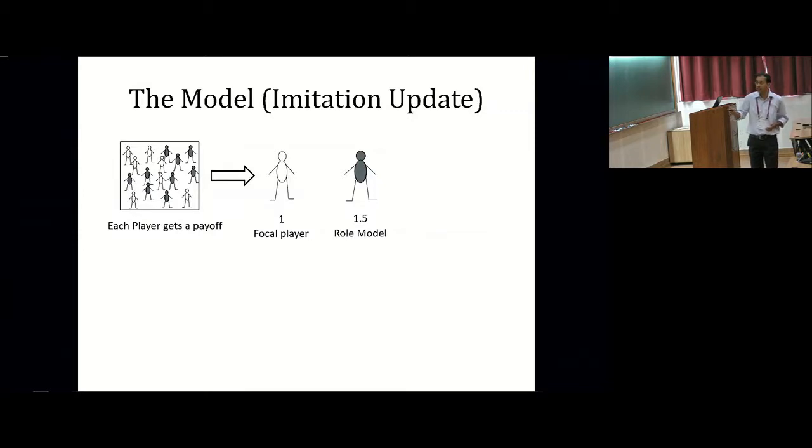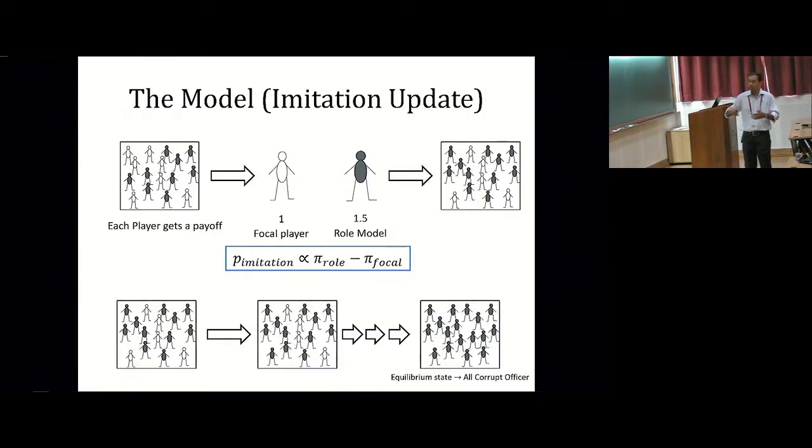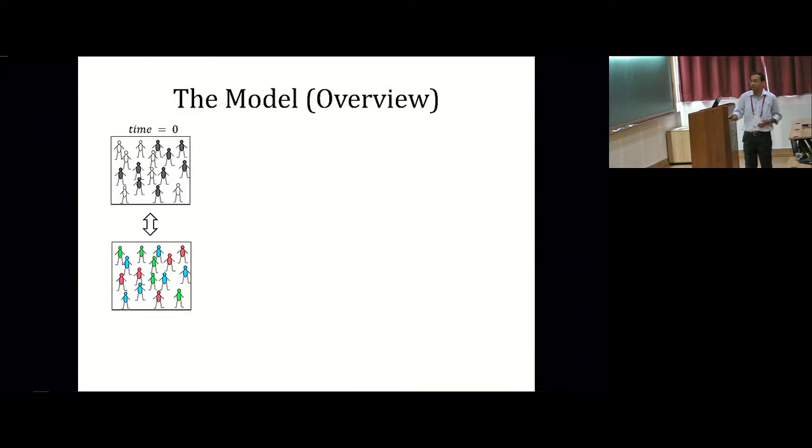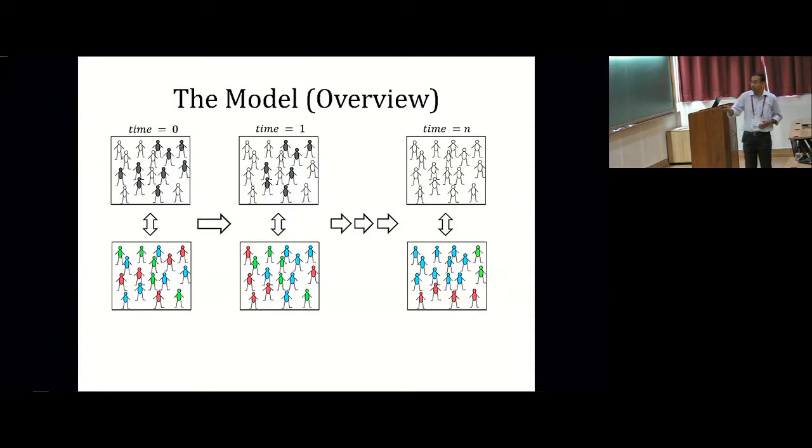For instance, in this case, a focal player is selected from the population, and a role model, which is another player, is also selected. The two compare their payoff. The focal player decides to imitate the role model with a probability proportional to the difference in payoffs. So if the payoff of the focal player is larger, then it retains the strategy that it had. If the focal player has a lower payoff, it can change and imitate the strategy of the role model with a probability proportional to this difference. And in this way, the imitation process proceeds, and over time, you have the population evolving. The strategies change in frequency over time, and eventually you can end up with a population consisting of either only honest officers and a combination of citizens of the three different types, which doesn't matter because they're all interacting with honest officers.